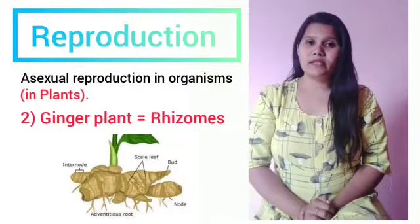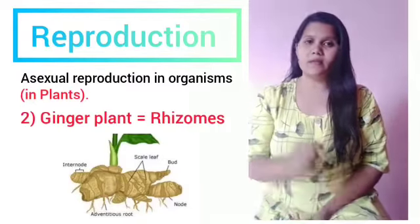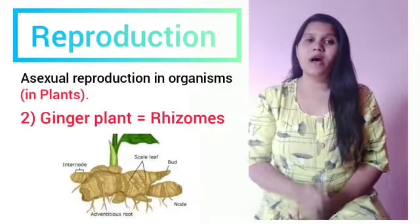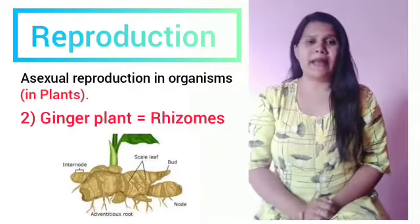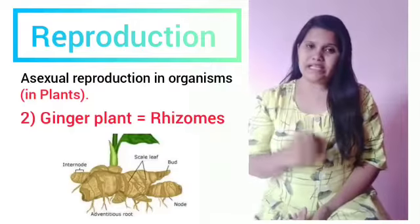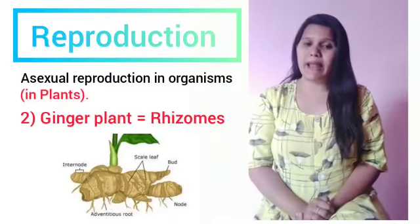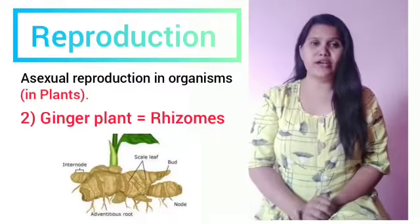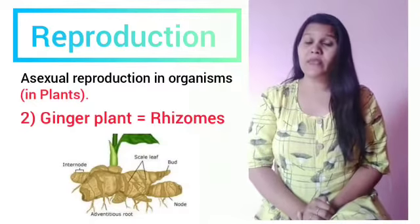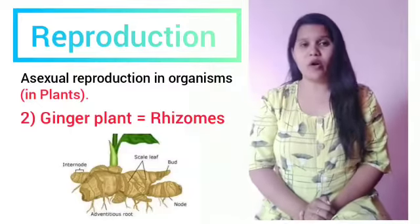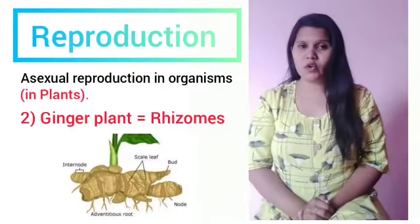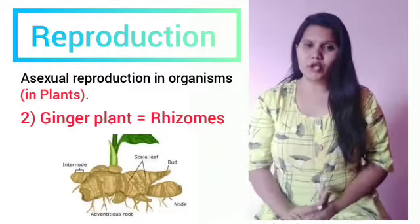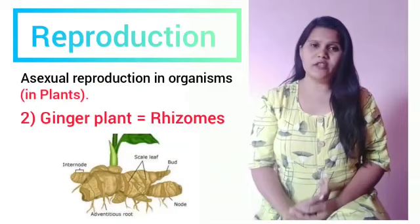Next, take the ginger plant. In ginger, the modified stem — the rhizome — itself has buds and nodes on its plant body. The bud grows into a new ginger plant, and the nodes later modify into adventitious roots, which help in the absorption of water and minerals from the soil.